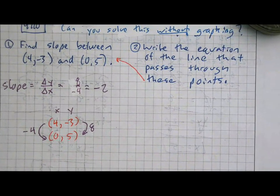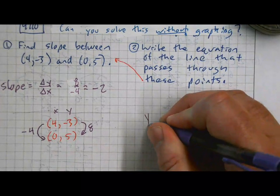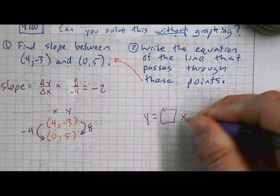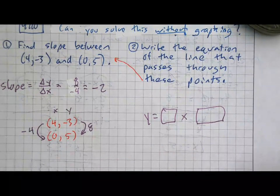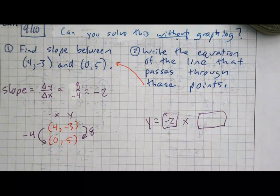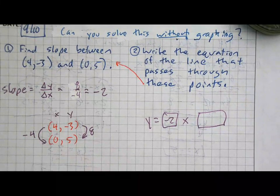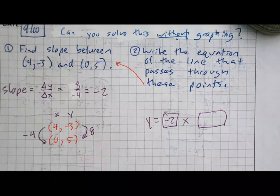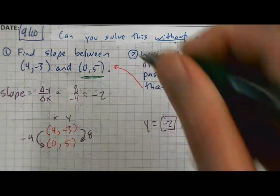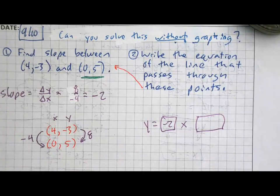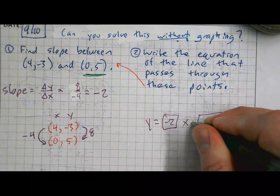All right. If we're trying to write the equation of a line that passes through this, then we need two things. We need a slope and we need a y-intercept. We just found the slope. The slope is negative 2. How are we going to find the y-intercept? Did anybody recognize that I actually gave you the y-intercept for this? The y-intercept is 5. And what's special about this point that lets you know that that was the y-intercept? Because the x is 0. So this would be a plus 5 and we'd be done.